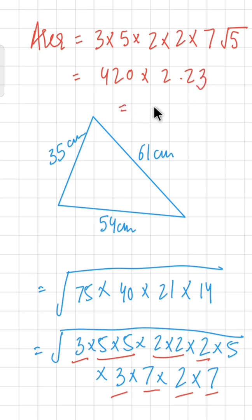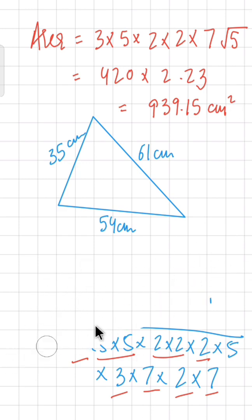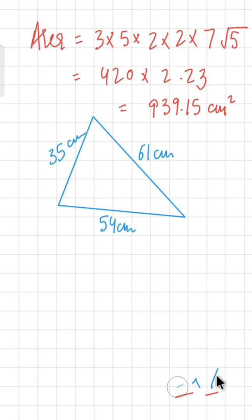The approximate value of √5 is 2.23 (or 2.236 to three decimal places). Multiplying 420 by 2.236, the area is approximately 939.15 square centimeters.